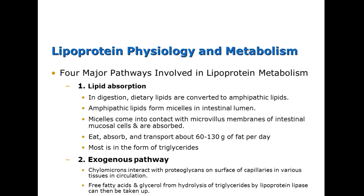Now let's look at how lipids make it from your food into your body. In digestion, dietary lipids are converted to amphipathic lipids, making them hydrophilic so they can float through plasma. They form micelles in the intestinal lumen, and when those micelles contact the microvillus membranes of intestinal mucosal cells, they are absorbed. We usually absorb and transport about 60 to 130 grams of fat per day, most of it in the form of triglycerides, which are highly affected by a recent meal.